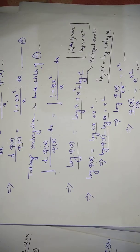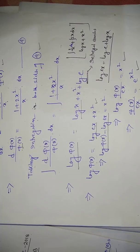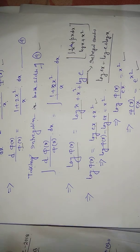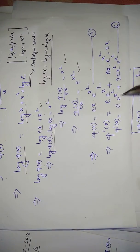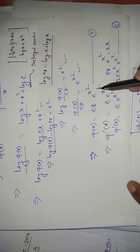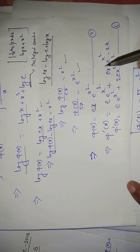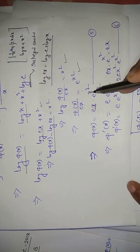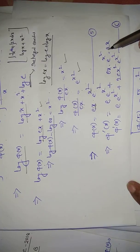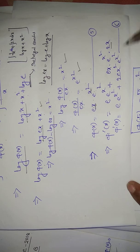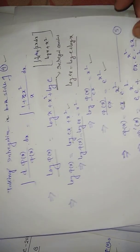Differentiating φ(x) = c·x·e^(x²) to get φ'(x): by the product rule, φ'(x) = c·e^(x²) + c·x·e^(x²)·2x = c·e^(x²)(1 + 2x²). This is equation (6).